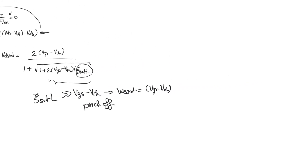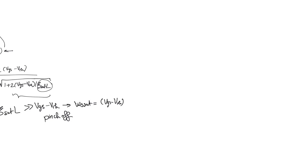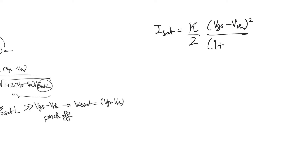To obtain an expression for saturation current, we take the ohmic current expression and substitute VDS_SAT. This gives: I_SAT equals (K/2) times (VGS minus VTH)², all divided by (1 plus (VGS minus VTH) over ESAT·L).